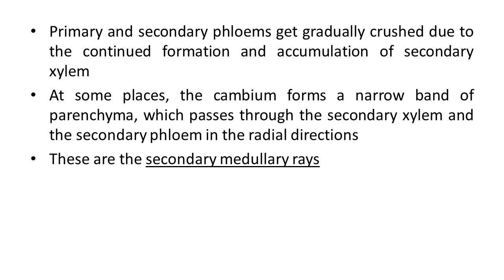Primary and secondary phloem gradually get crushed because the cambium develops new cells on both sides, pushing the phloem outward. At some places, the cambium forms a narrow band of parenchyma passing through the secondary xylem and secondary phloem in the radial direction — this arrangement is known as secondary medullary rays. Gradually, after primary xylem and primary phloem are established, at a certain age secondary growth is observed due to cambium activity.